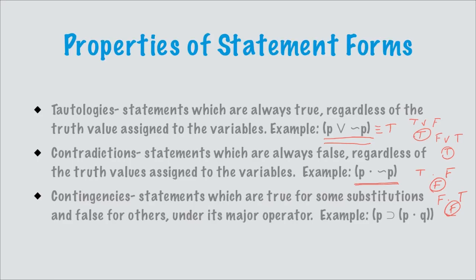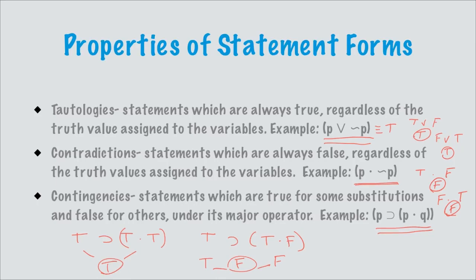The final property is what happens when a statement is sometimes true and sometimes false — that's a contingency. A contingent statement is one which for some substitutions is true and for others is false. For example, 'p and q': if both p and q are true, the statement is true; but if p is true and q is false, the conjunction is false. So that statement is sometimes true and sometimes false. That's all we're doing when looking for properties of statements.